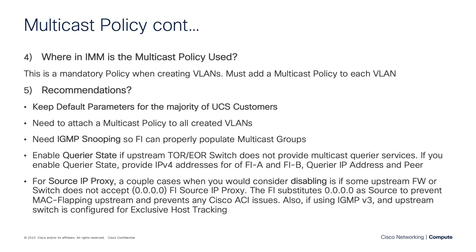You need that setting turned on. If the upstream top-of-rack or end-of-row switch is not configured for multicast, then you might consider enabling querier state, which lets the FI take over that capability. In that case you'd have to provide two IPv4 addresses — one for the querier IP address on one FI, and one for the peer, the opposite FI.